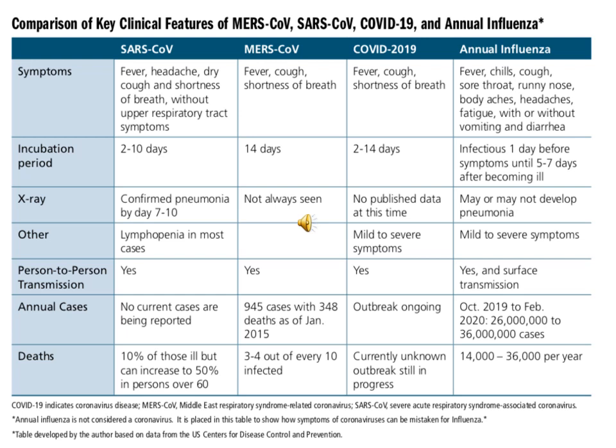This slide compares the genetic features and symptoms of MERS, SARS-CoV, COVID-19, and seasonal influenza. MERS — Middle East Respiratory Syndrome — occurred in the Middle East in 2015. Symptoms of SARS-CoV include fever, headache, dry cough, and shortness of breath without upper respiratory symptoms. COVID-19 symptoms are typically cough, fever, and shortness of breath. Annual influenza causes fever, chills, cough, sore throat, body aches, and headaches.